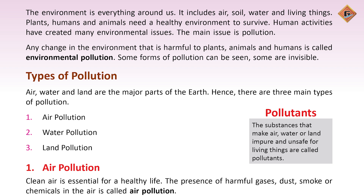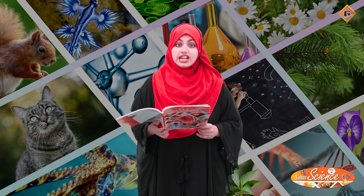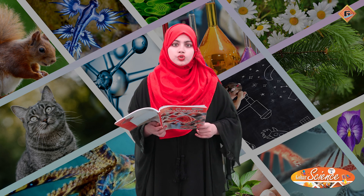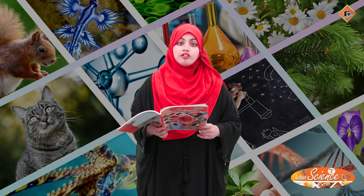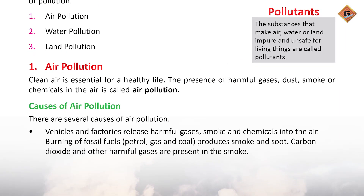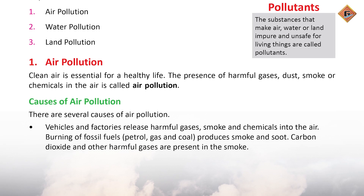Pata kyun inko major classes keh rahe hai? Kyunke ye teenon chizein — yaani ke air, water aur land — humari earth ke major parts hain. Is wajah se in mein aane wale pollution ko hum major types of pollution bhi kehenge. Toh chalte hain hum apne air pollution ki taraf.